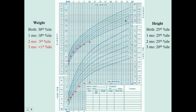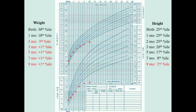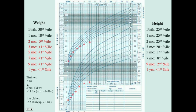By the third month visit, the child is already below the first percentile, and this persists continuously into the first year of age. This child's birth weight was seven pounds. At four to five months of age, we expect the baby's birth weight to have doubled, which would be 14 pounds, but this child is only around 11 pounds. At one year of age, we expect the birth weight to have tripled. This child is only 15.5 pounds, just a little bit over doubling.